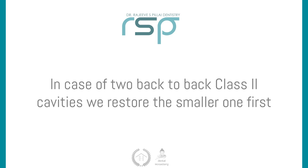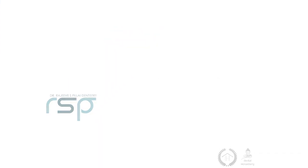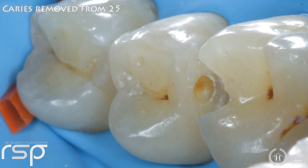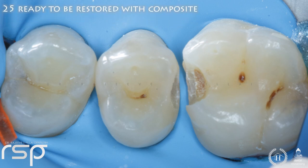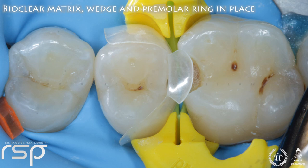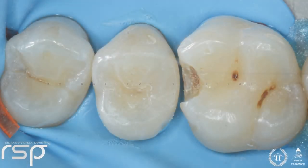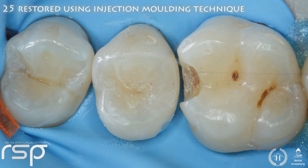Also remember this: always restore the smaller cavity first and then only go about restoring the bigger one. This is after the opportunistic class 2 preparation on 2-5. You can see the occlusal view of the cavity preparation on 2-5 here. This is after injection molding of 2-5 with 3M bulk fill heated packable composites. Finishing and polishing will be done after completing both the restorations. Now it is time to restore the 2-6.